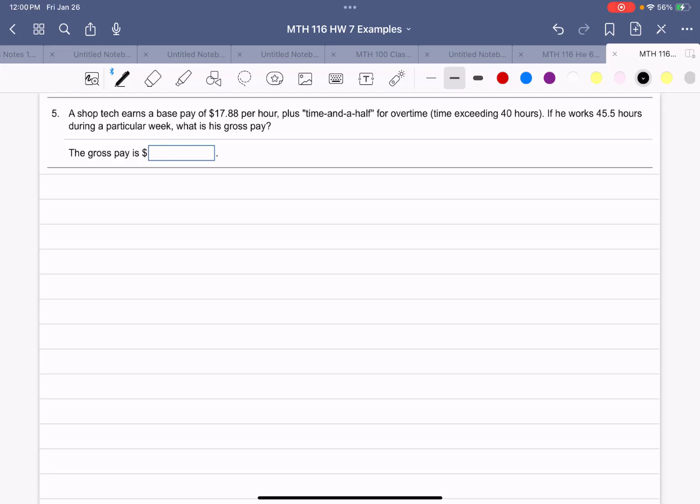Example number five. A shop tech earns a base pay of $17.88 per hour plus time and a half for overtime, that is time over 40 hours. If he works 45.5 hours during a particular week, what's the gross pay? So the total is 45.5.